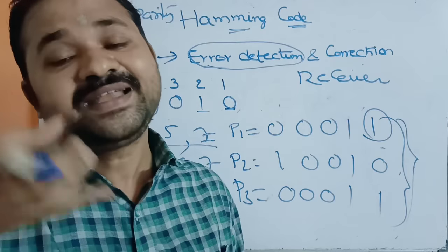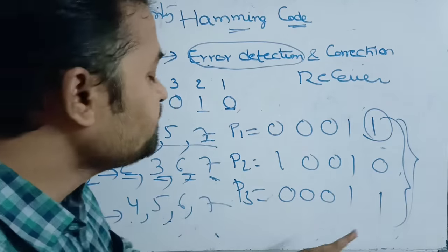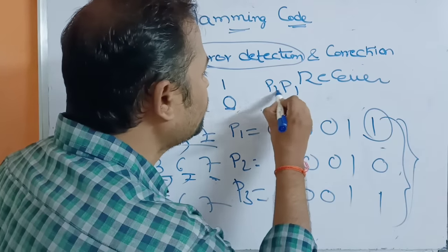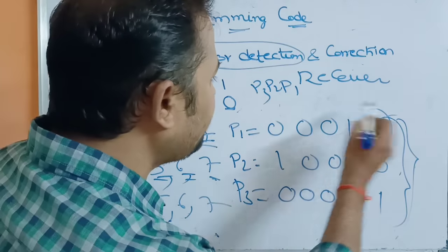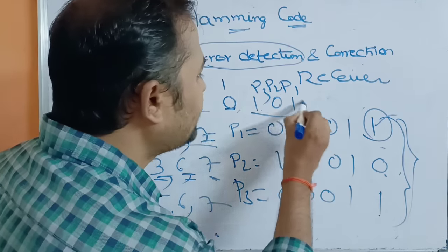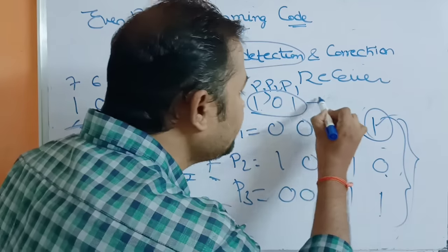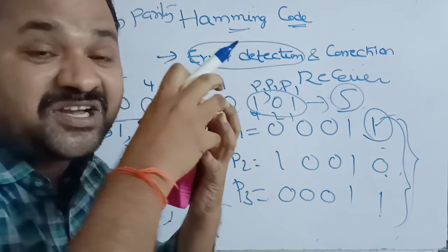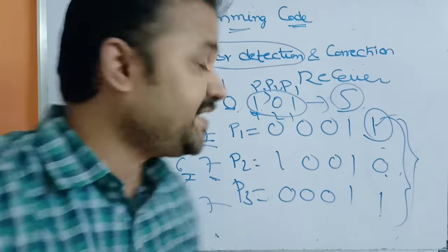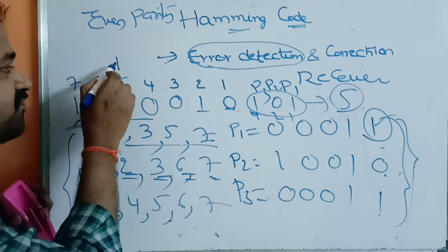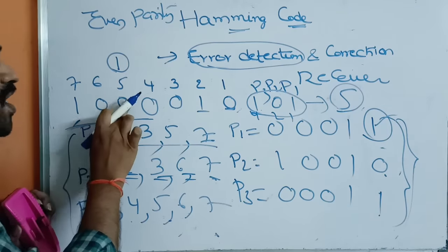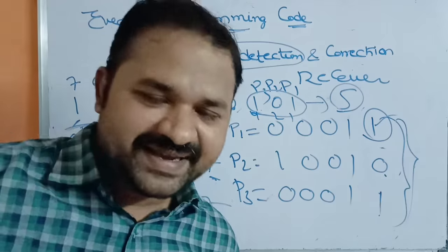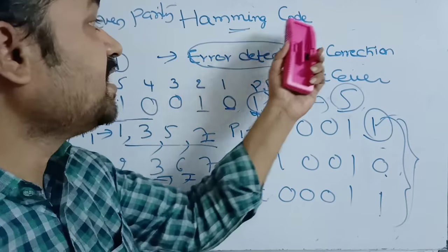To find which position has the error, we convert the parity result P3, P2, P1 = 1, 0, 1 from binary to decimal: 1×4 + 0×2 + 1×1 = 5. So the error is at position 5. At position 5, the bit was changed from 1 to 0. The receiver corrects it by flipping the bit back to 1. In this way, the receiver both detects and corrects the error using the Hamming code approach.